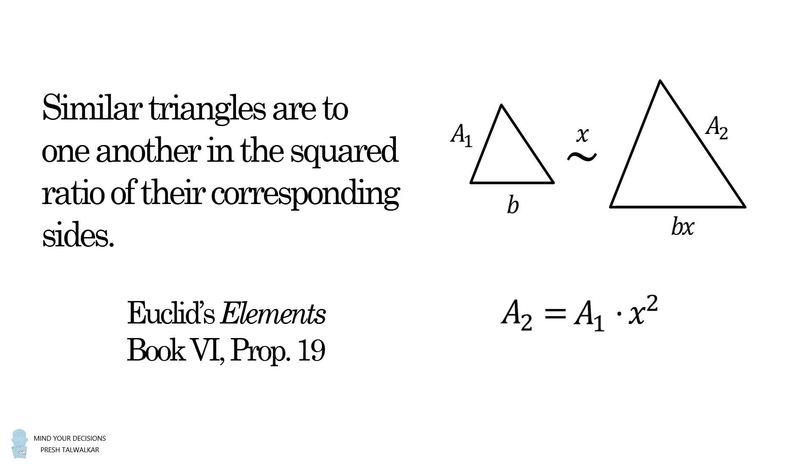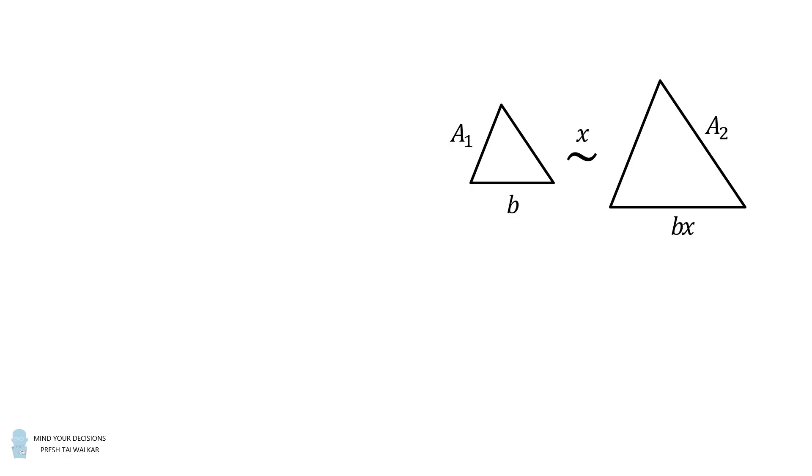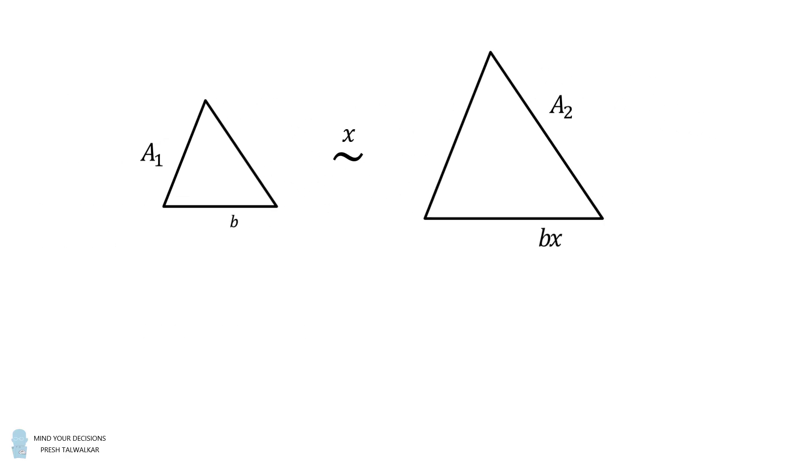Now, we've all seen this formula before, but why is it true? Let's quickly go over a justification. If the two triangles are similar, with their sides in a proportion equal to x, then the heights of the triangles will also be in a proportion that's equal to x.